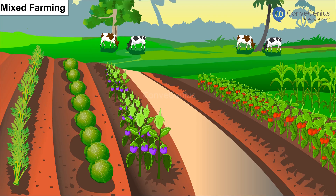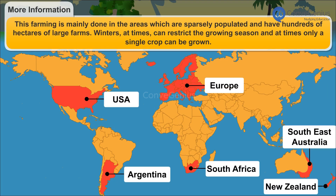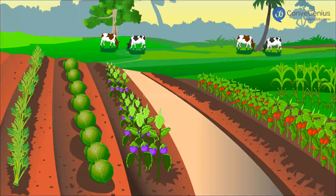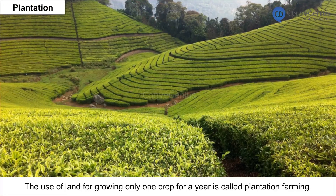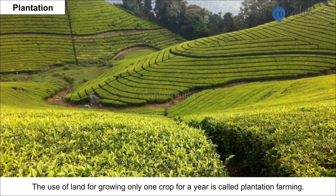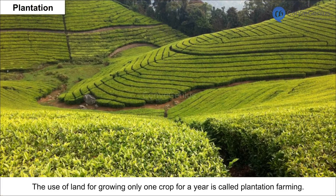Mixed Farming is the use of land for growing food and fodder crops and rearing livestock. Plantation farming is the use of land for growing only one crop for a year.